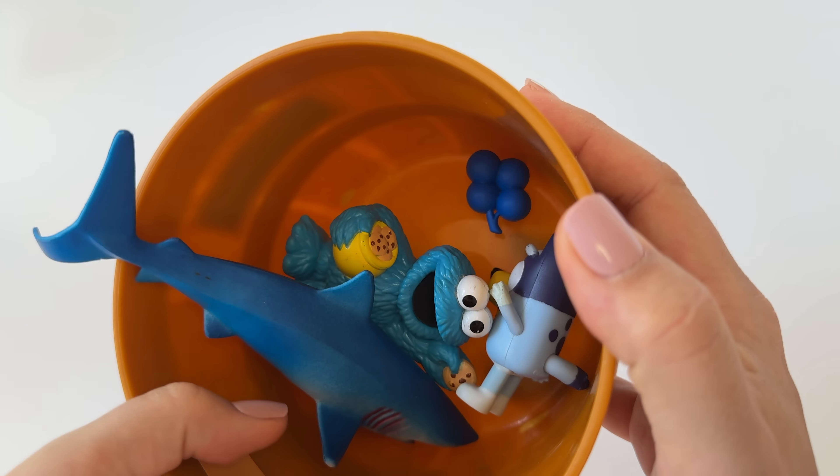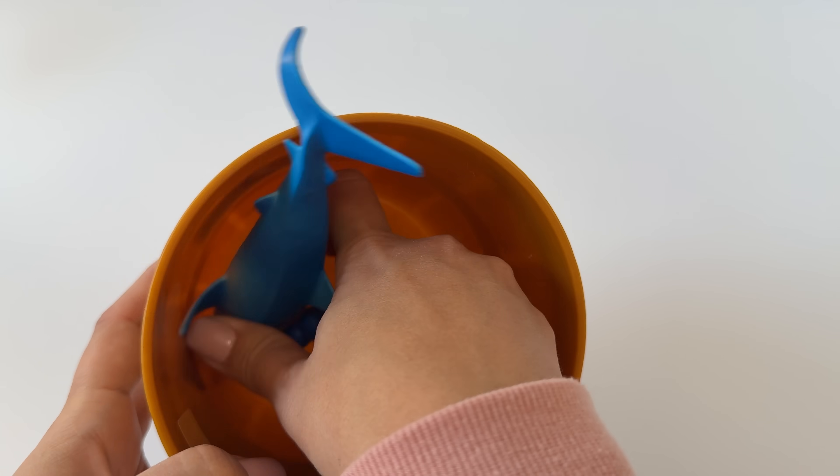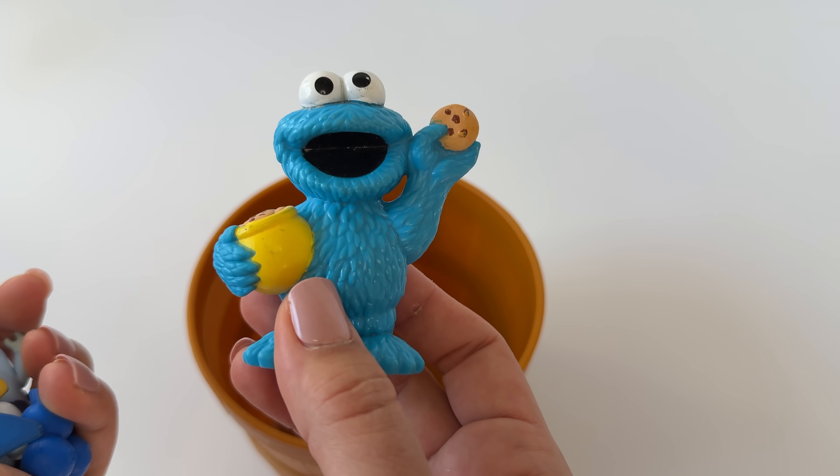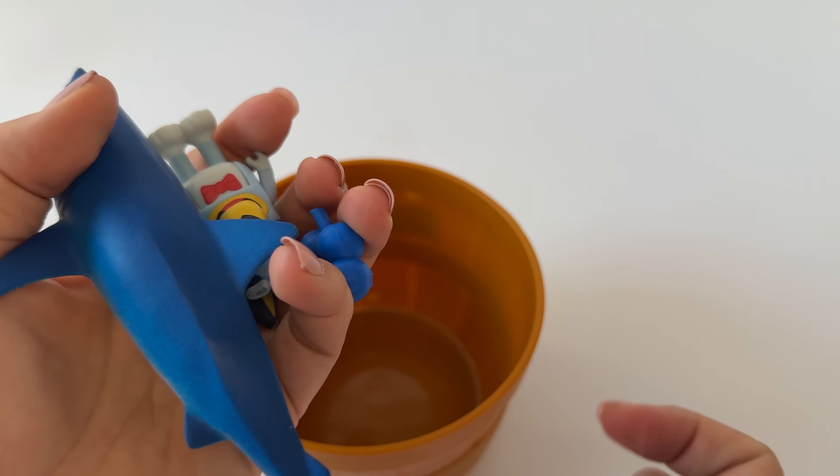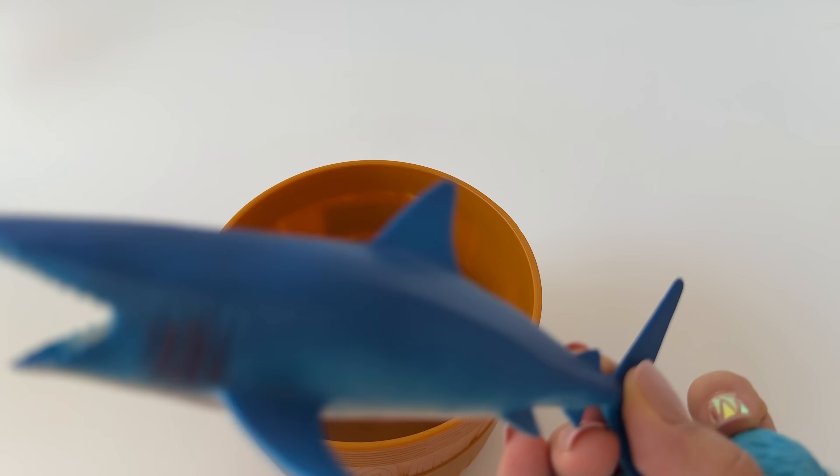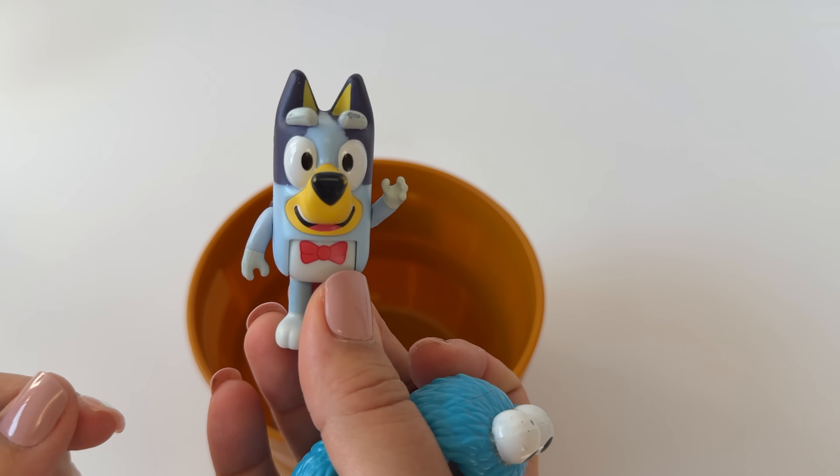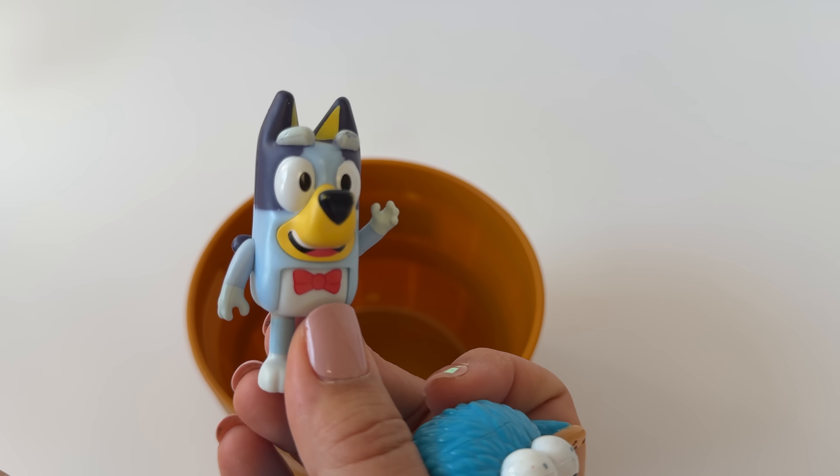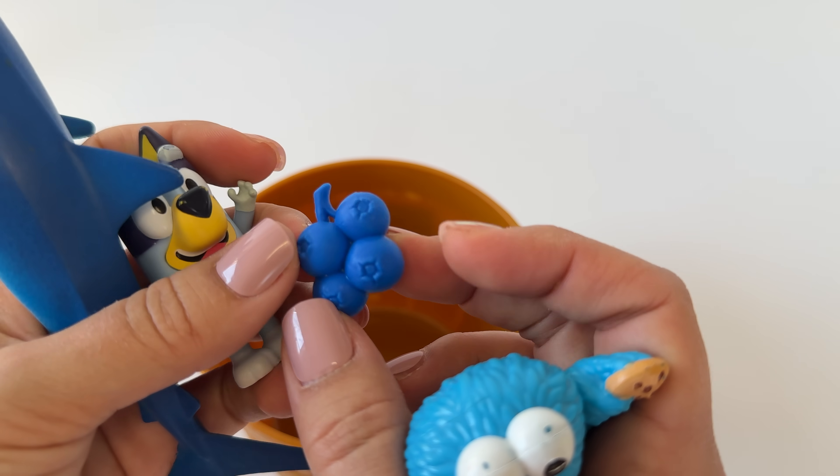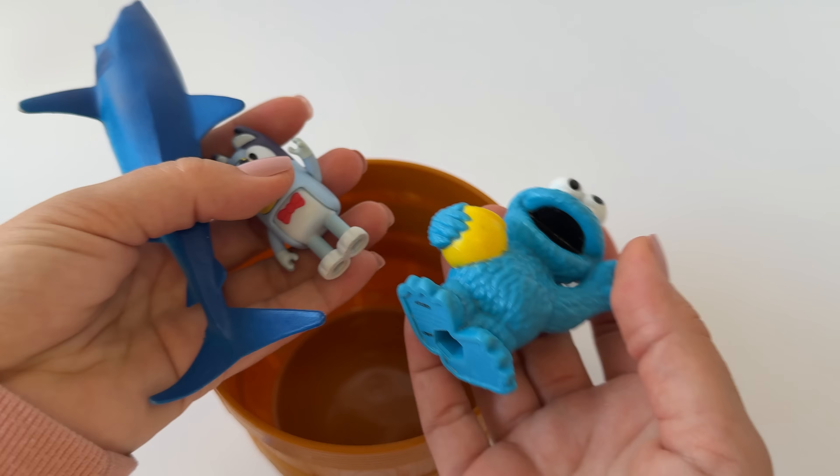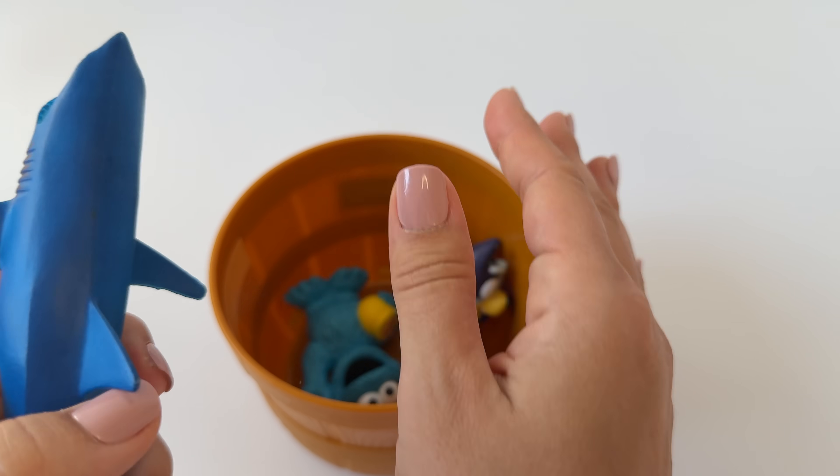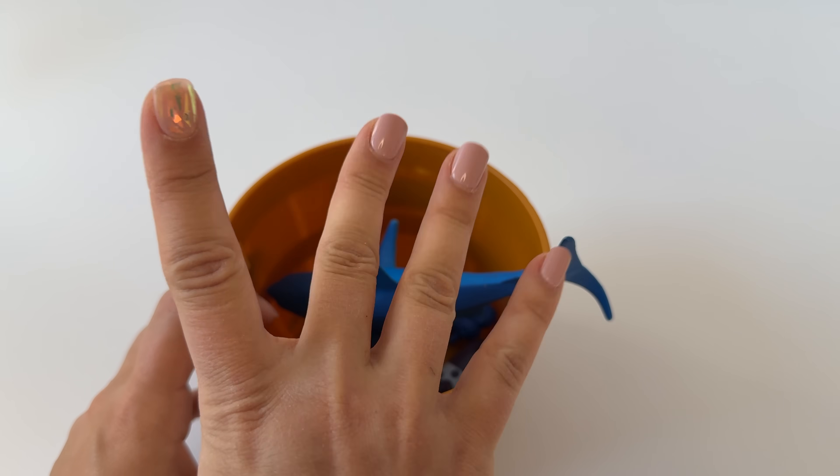What's in here? Those aren't foods, but they're blue. Looks like we have some blue things. Blue Cookie Monster. A blue shark. A blue Bluey. Hello. And some blue blueberries. Oh, that's a food. How many blue things do we have? One, two, three, four. Four blue things.